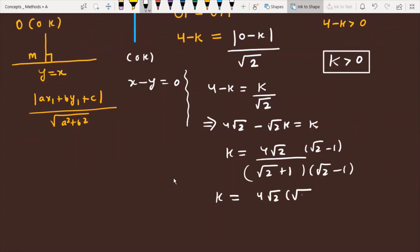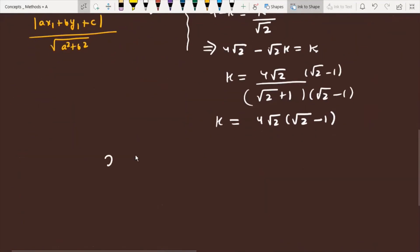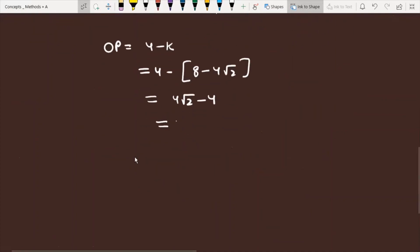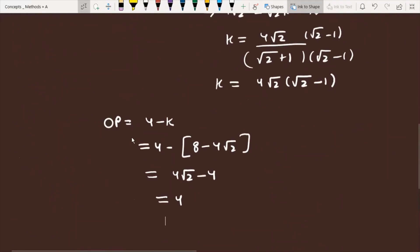Here we have k equals 4 root 2 divided by root 2 plus 1. If you want to further simplify, then multiply numerator and denominator by root 2 minus 1. This gives 4 root 2 times root 2 minus 1 as k. But we need the value of 4 minus k, which is actually the radius OP. So 4 minus k equals 8 minus 4 root 2. Further, if you simplify it, you will get 4 root 2 minus 4. Then you take 4 common and you will get 4 times root 2 minus 1, which is the radius of the given circle.